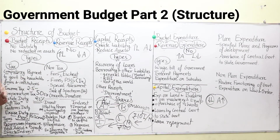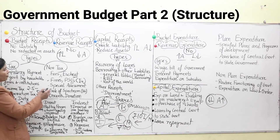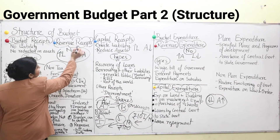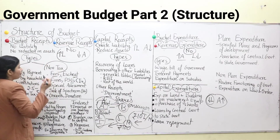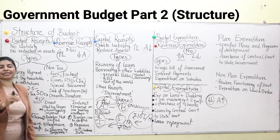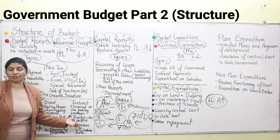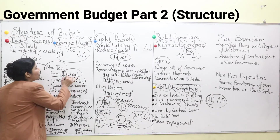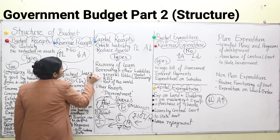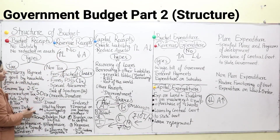Now we have non-tax receipts of the government. Non-tax receipts include fees and fines. Fees: for example, we pay a license fee for getting a driving license, and that fee is received by the government as revenue. Fines: when we break any traffic rules, we pay fines, which also go to revenue receipts. Escheat: this is the property left by a person who has died where there is no legal claimant — no heir, no son, no daughter, no nomination for that property. That heirless property goes to the government and is a form of revenue receipt.